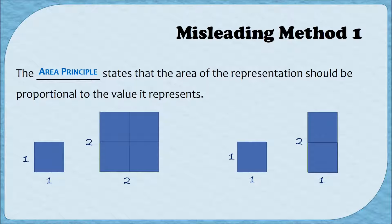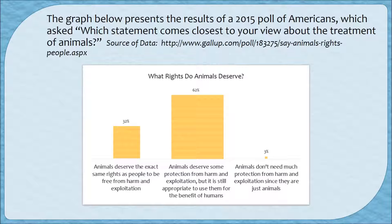Folks that abuse the area principle generally do so to exaggerate differences. The graph below presents the results of a 2015 poll of Americans asking about their views on the treatment of animals. There were three options: the middle option had the largest amount at 62%, the right had the smallest at 3%. Look at how much smaller the bar for 3% is compared to 62%. The 32% bar on the left also looks substantially smaller than the 62% bar, even though 32% should be about half as large as 62%.